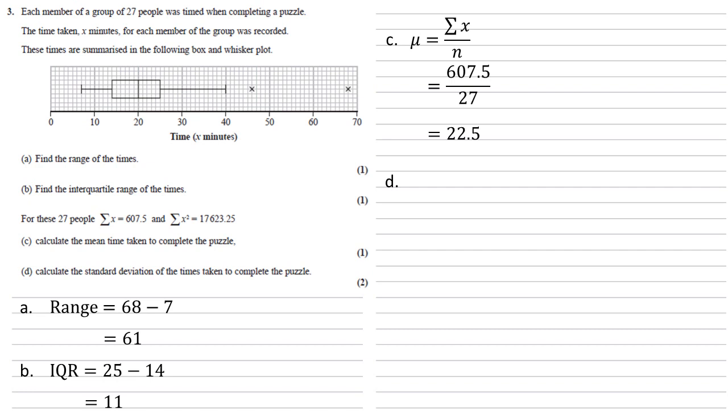For part D, we need to calculate the standard deviation of the times taken to complete the puzzle. So our standard deviation sigma is the square root of sigma x squared over n minus mu squared. Putting our values into that, we have the square root of 17,623.25 over 27, minus the 22.5 that we've just worked out squared. So the square root of 146.46, which is 12.1.